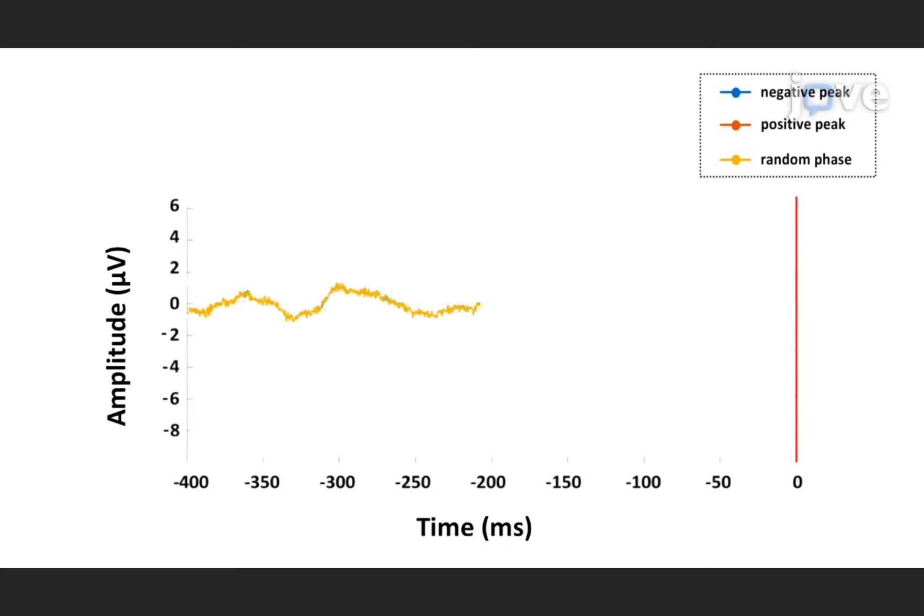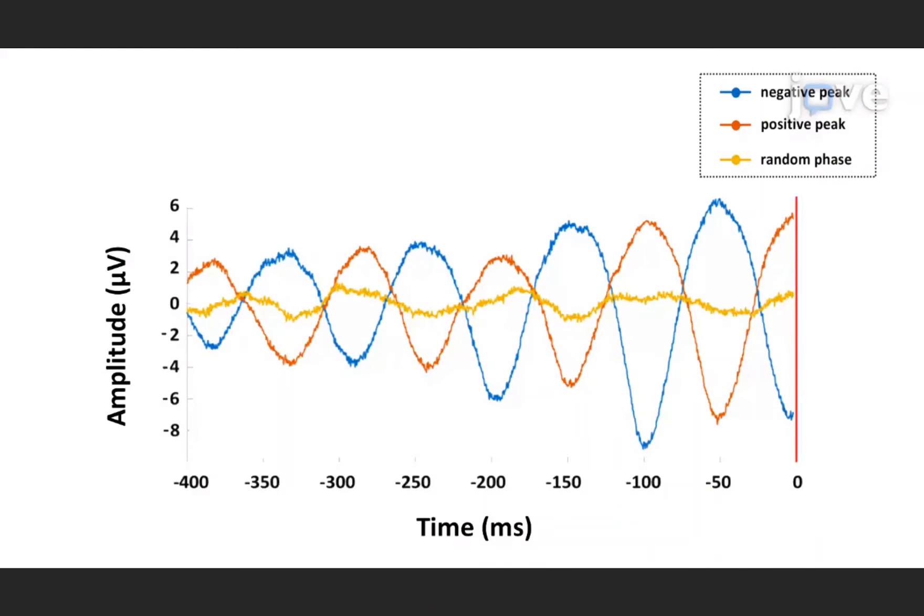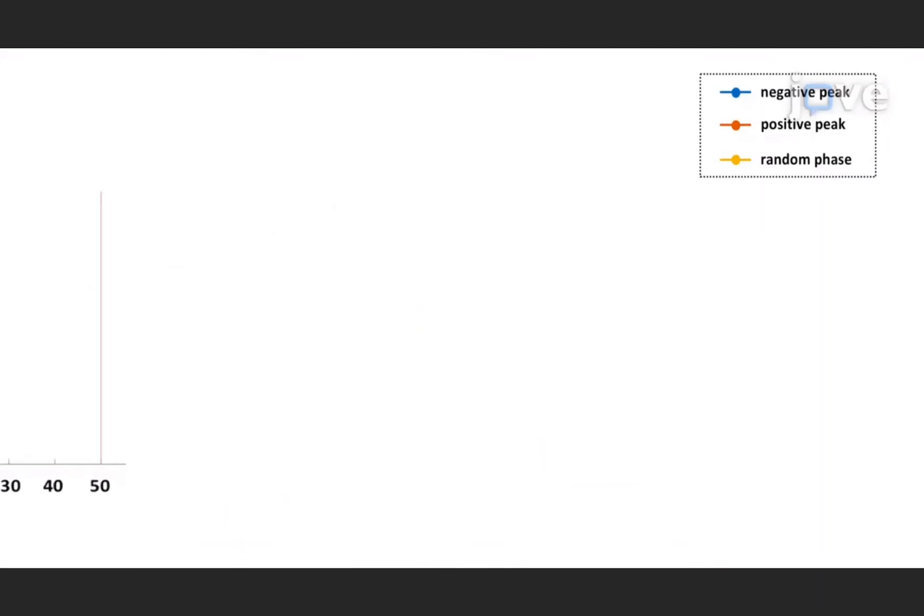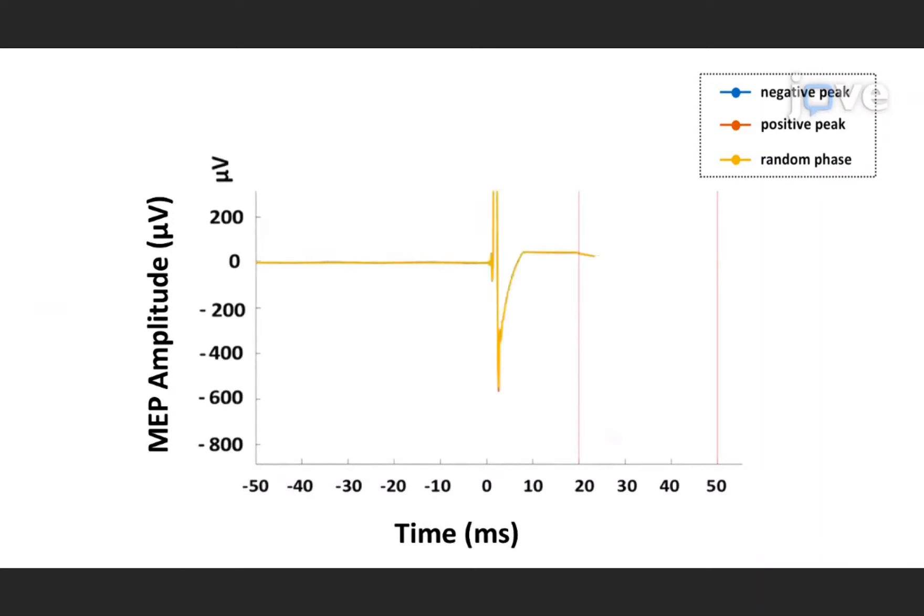In these figures, an average pre-stimulus EEG signal in the 400 ms before the TMS pulse for three predefined conditions and average elicited motor-evoked potentials recorded from the right-hand muscles are shown.